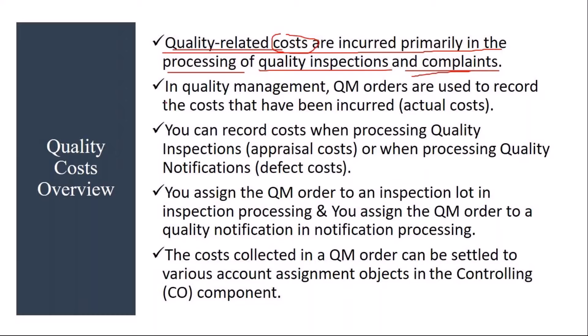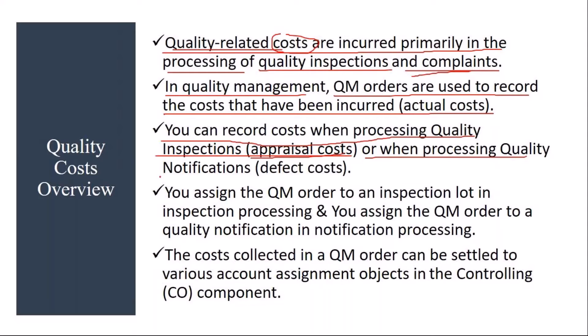In quality management, QM orders are used to record the costs that have been incurred. If you want to record quality costs in the QM module, you need to create a QM order. You can record costs when processing quality inspections — these are called appraisal costs — or when processing quality notifications, which are called defect costs. So basically there are two types of costs: appraisal costs and defect costs.